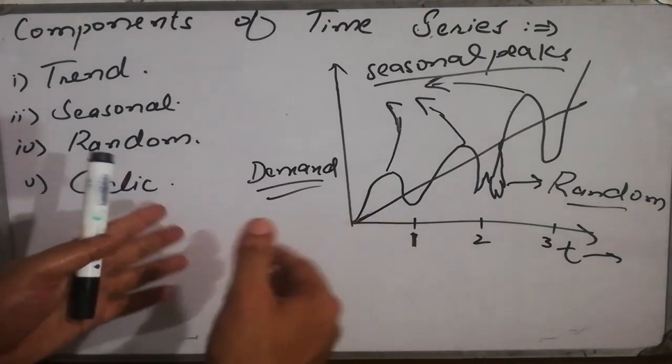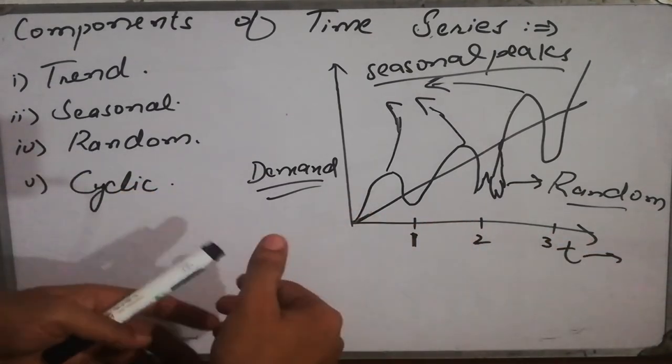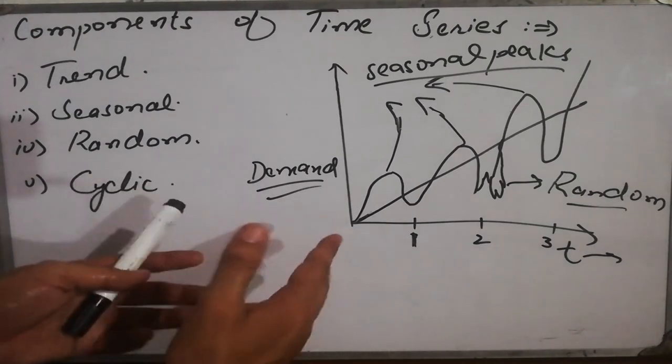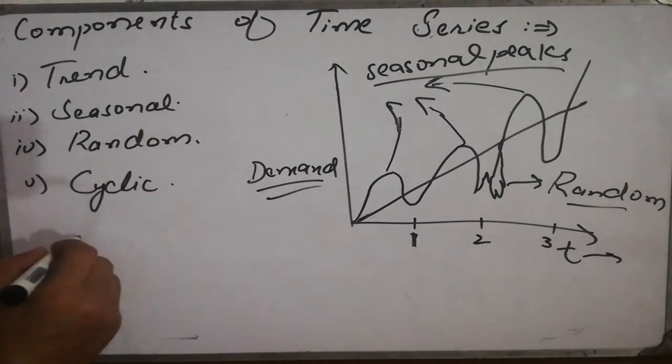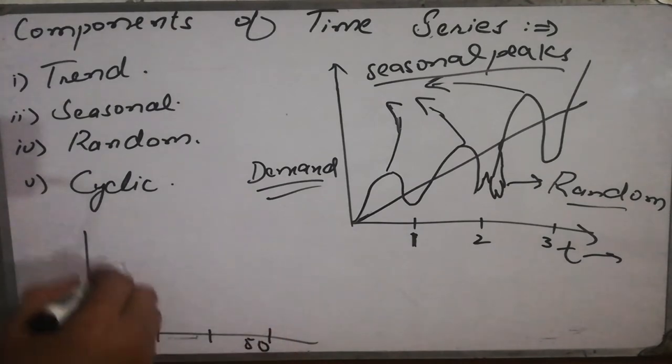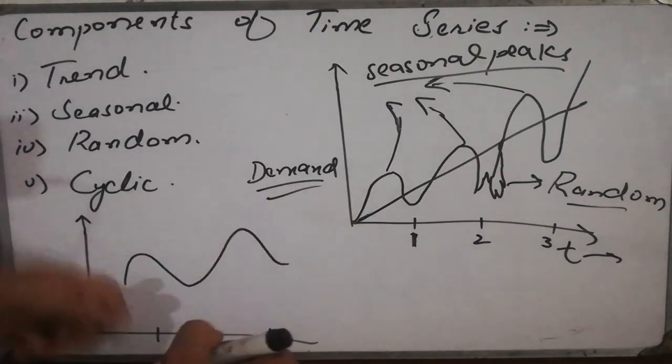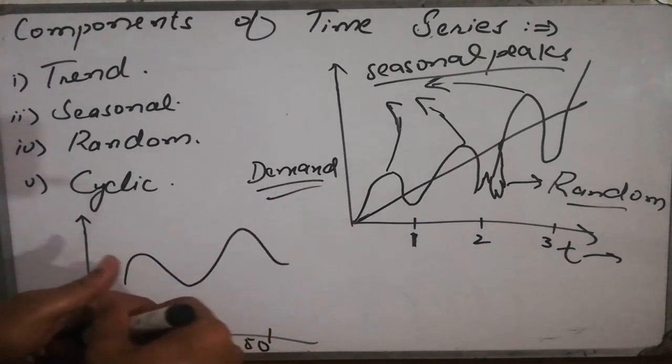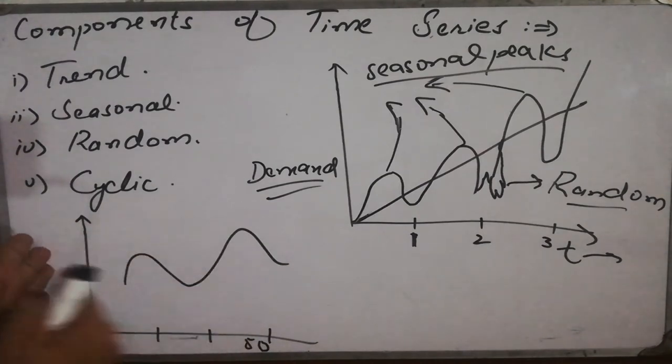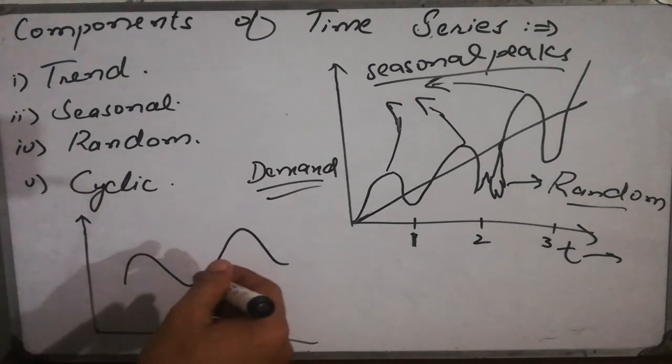And finally the cyclic one. For the cyclic, we need certain data of certain years or a long-term data in order to predict our graph for that. So let's suppose it might be something like this if it is for 50 years. Let's say this is 50 year tenure, and then you might get the data something like this. So it requires the previous data for a long period of time and then you can predict cyclic data.